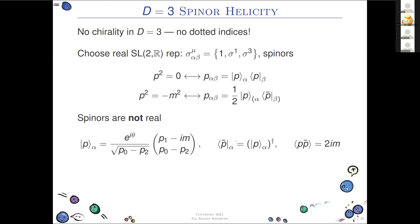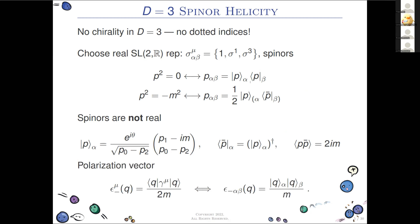The sign of the mass determines the helicity: the unbarred spinor is a negative helicity state, the barred spinor is positive helicity. If you dot these together, the inner product is 2im in this representation. In other representations it's always proportional to m, but the prefactor differs.